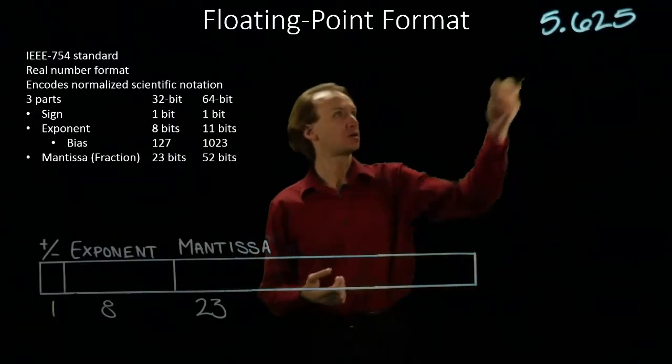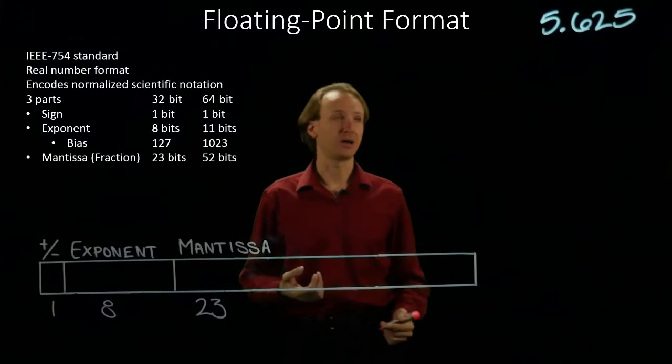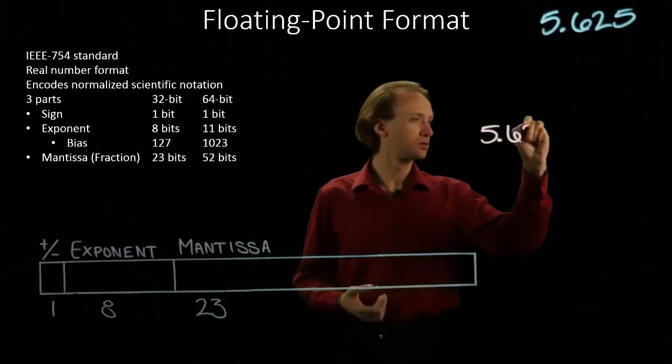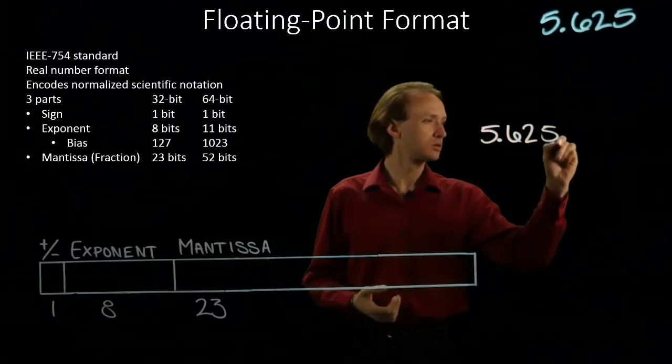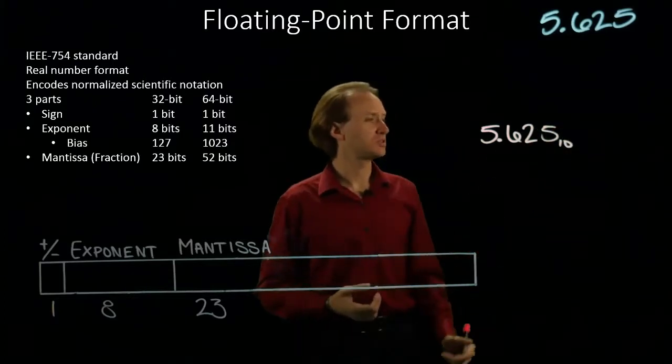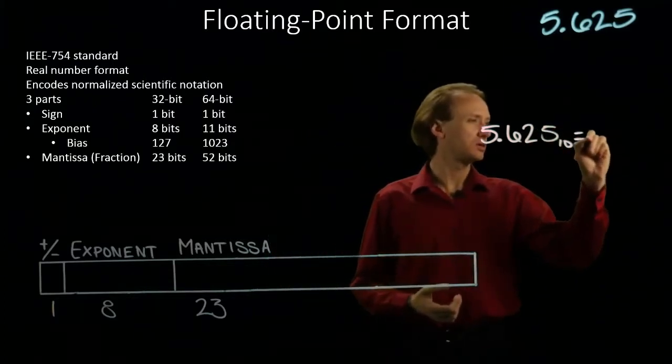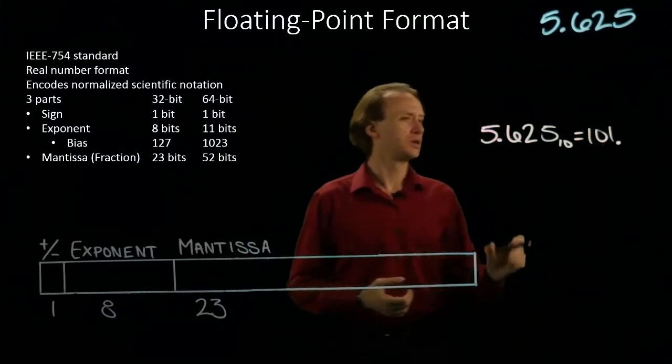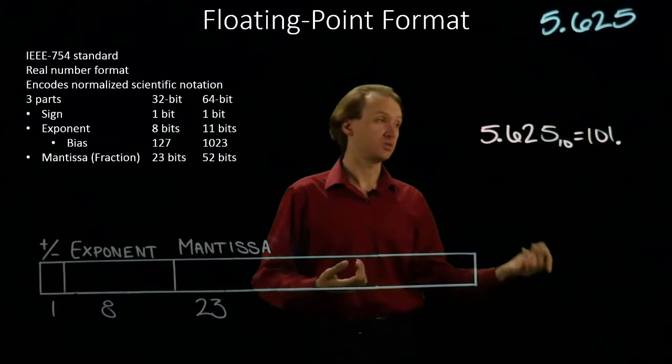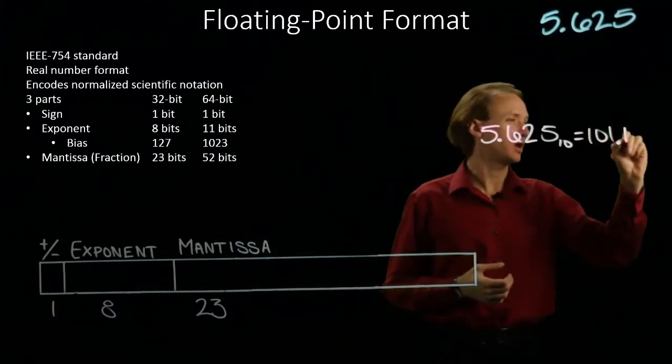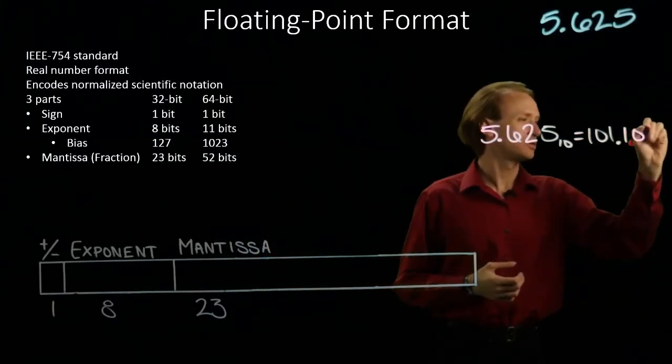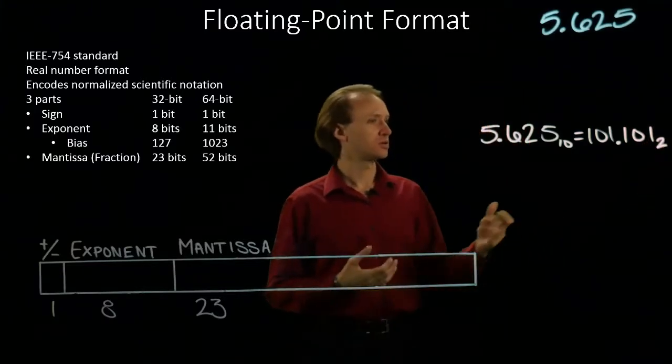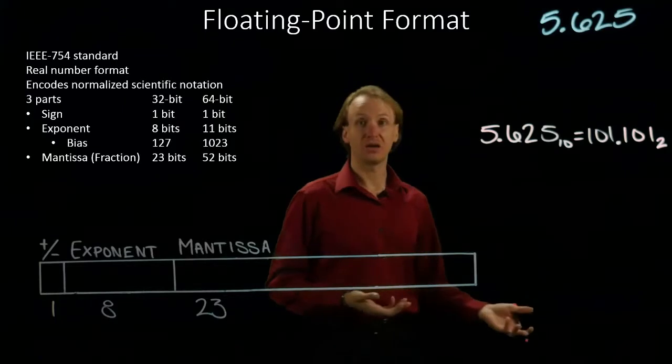I will start by converting my number into binary. 5.625 is 5 point and this is a half plus a one-eighth. So I've got a half bit, no quarter bit, but a one-eighth bit. So there's 5.625 in binary.